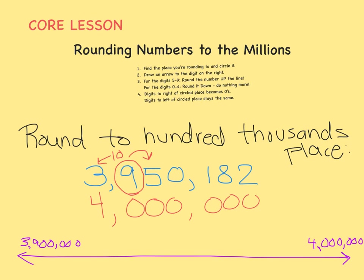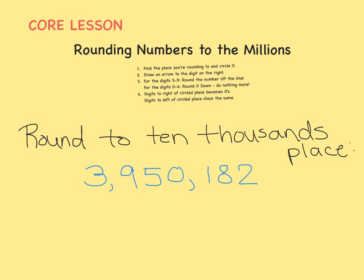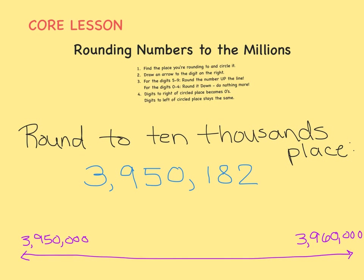You guessed it — this number rounds up to 4 million. And finally, let's round this number to the nearest ten-thousands place. We're just trying to figure out which ten-thousands it's closer to: 3,950,000 or 3,960,000?